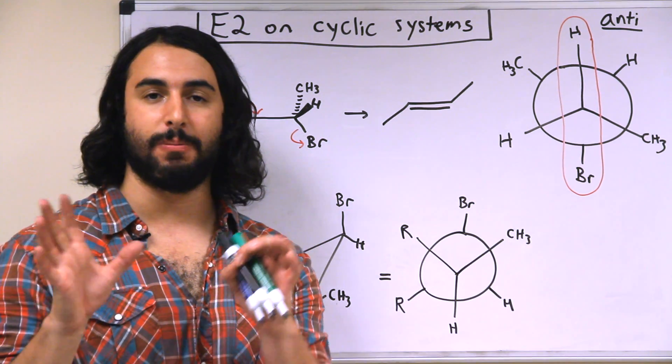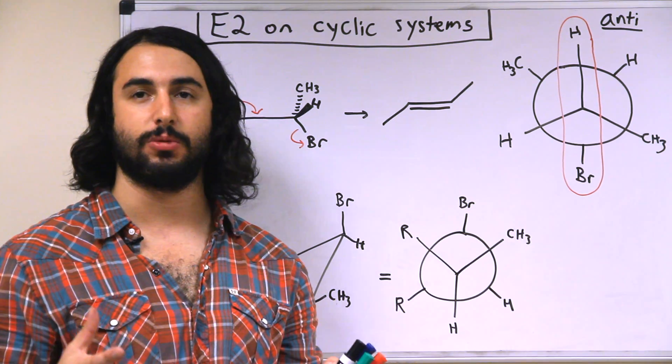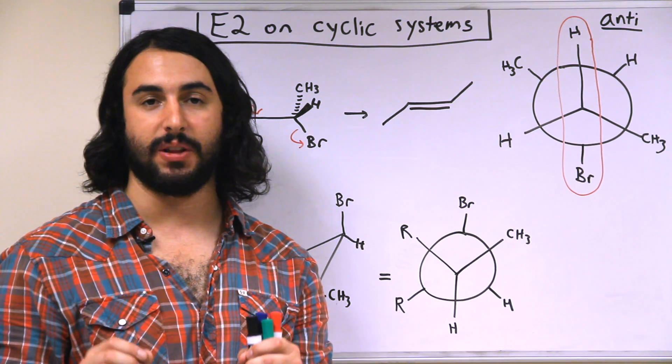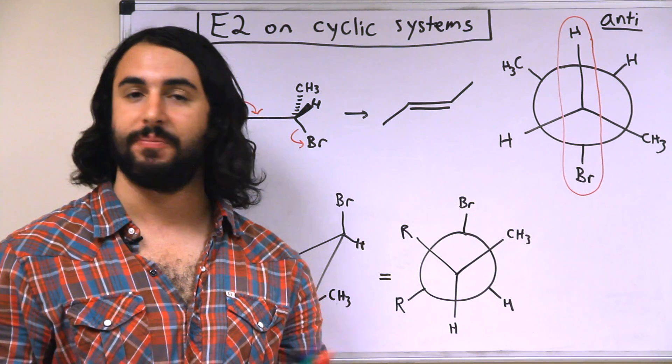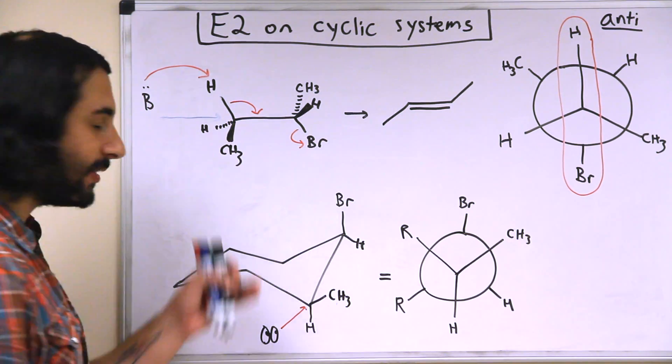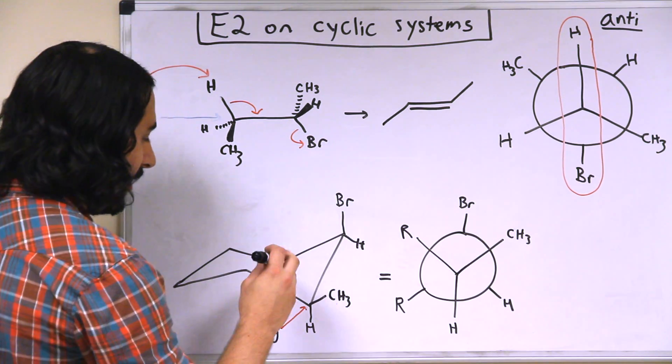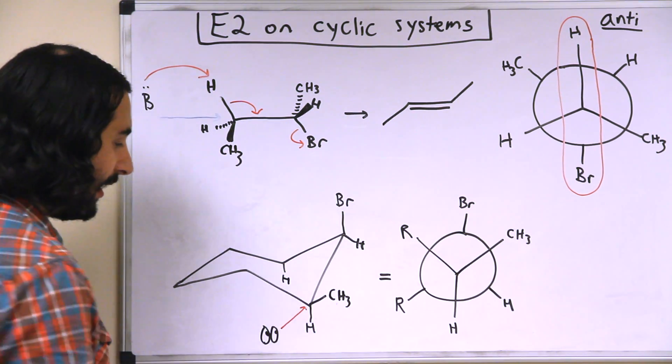We know that we're always in equilibrium between the two chairs. There's a lot to think about in terms of which chair is going to promote elimination. If the leaving group is equatorial in one chair, that's not going to work. We have to have it in the axial position, and then once we have it axial, only protons that are on beta carbons and also in the axial position can participate.